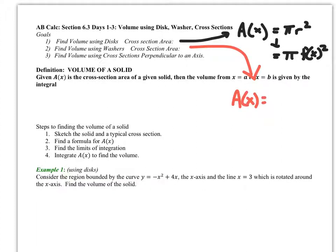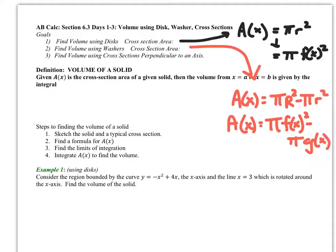You might recognize this from geometry, but this is the washer method. Typically, what you'll see with the washer method is some function and another function that are both involved in the revolution or the rotation. So for example, let's just sketch real quick. Let's say this is f(x), and here is g(x).